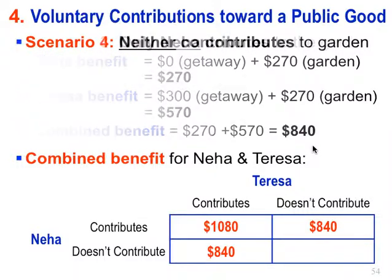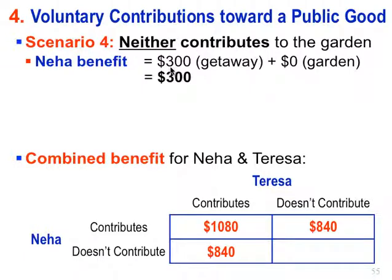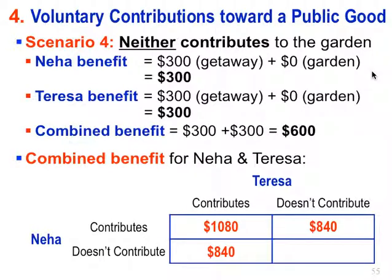The last scenario — scenario four — is what happens if neither contributes to the garden. That's the lower right. If neither contributes, Neha gets the $300 benefit from the weekend getaway, with no benefit from the garden since nobody contributes. So her total benefit is $300. The same is true for Teresa — she only gets the private benefit of the weekend getaway. The combined benefit is $300 plus $300, or $600, so the lower right value is $600.